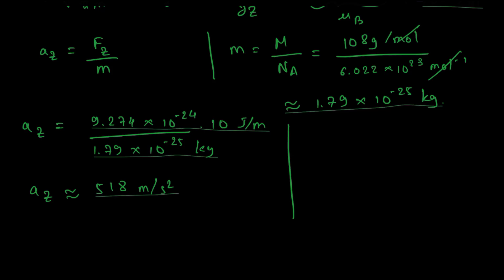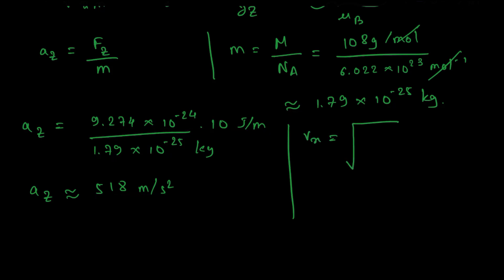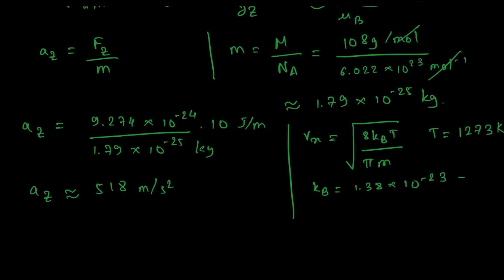Now we also need to calculate the velocity in the x direction, given by the mean thermal distribution formula: v = √(8k_BT / πm), where k_B is the Boltzmann constant. The temperature is 1000 degrees centigrade, which converts to 1273 Kelvin. The Boltzmann constant is 1.38 × 10⁻²³ joules per Kelvin. Plugging in all values, the velocity comes out to be 499.91, which I'll take as approximately 500 meters per second.